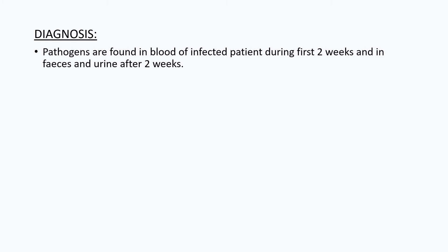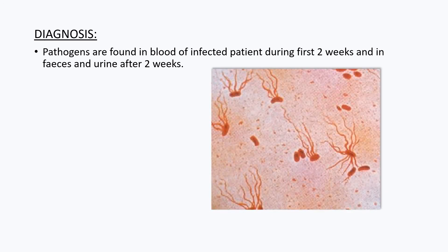If a person is infected, diagnosis is done using tests. As the typhoid pathogens are found in the blood of the infected patient during the first two weeks, and in feces and urine after two weeks, a specific test known as the Widal test is done to confirm the diagnosis.